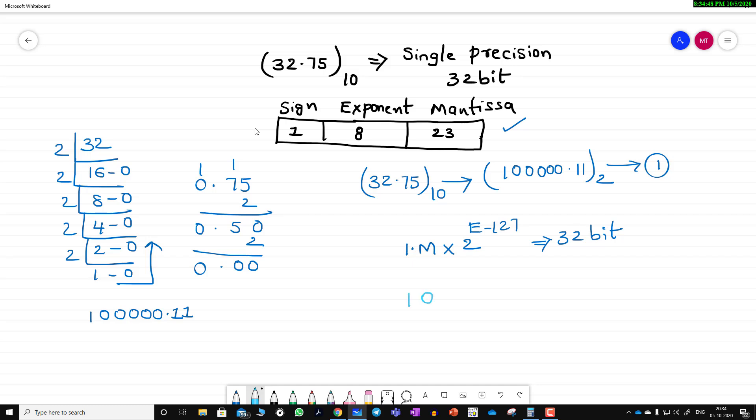So 100000.11 needs to be represented in this format. I'm moving the decimal point here, so this can be written as 1.0000011 times 2 to the power 5. I'm moving it towards the left by 5 bits.